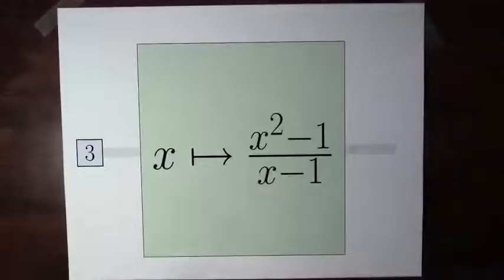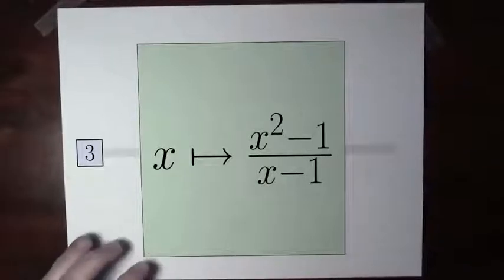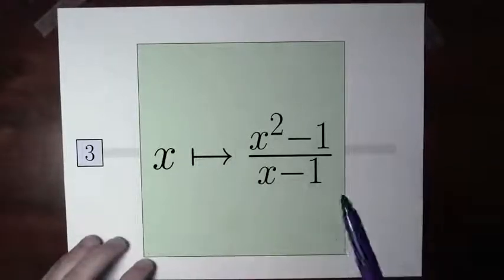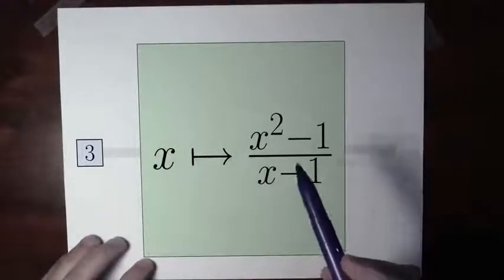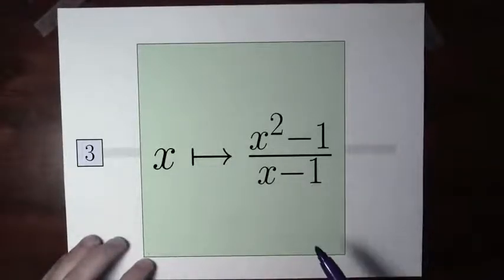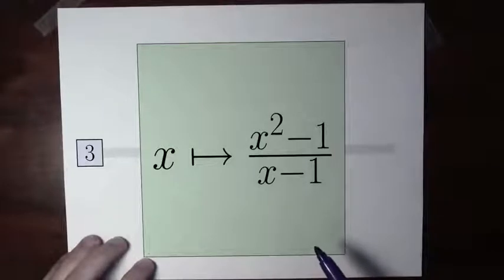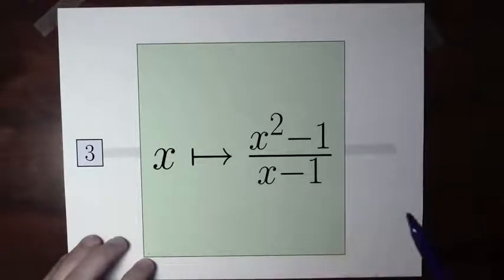There's a ton of subtlety to this definition, so it's worth looking at an example. Let's take a look at this function — the function that takes an input x and spits out x squared minus 1 divided by x minus 1.